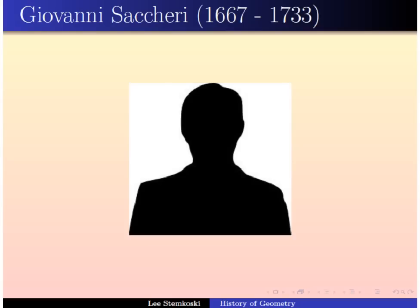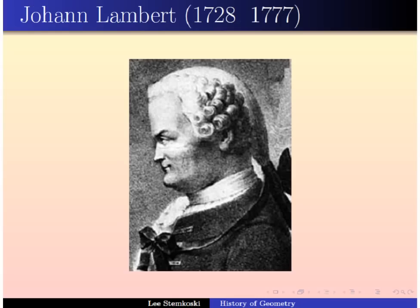Another individual who did work along the same lines at approximately the same time was Johan Lambert, a Swiss mathematician most famous for showing that pi was an irrational number. He also investigated the Saccheri quadrilateral and the hypothesis that the fourth angle was acute, trying to explore properties of this geometry. He noticed that in this geometry, as the area of a triangle decreases, the sum of the angles of the triangle also decreases — so triangles behave differently if you don't assume Euclid's fifth axiom.